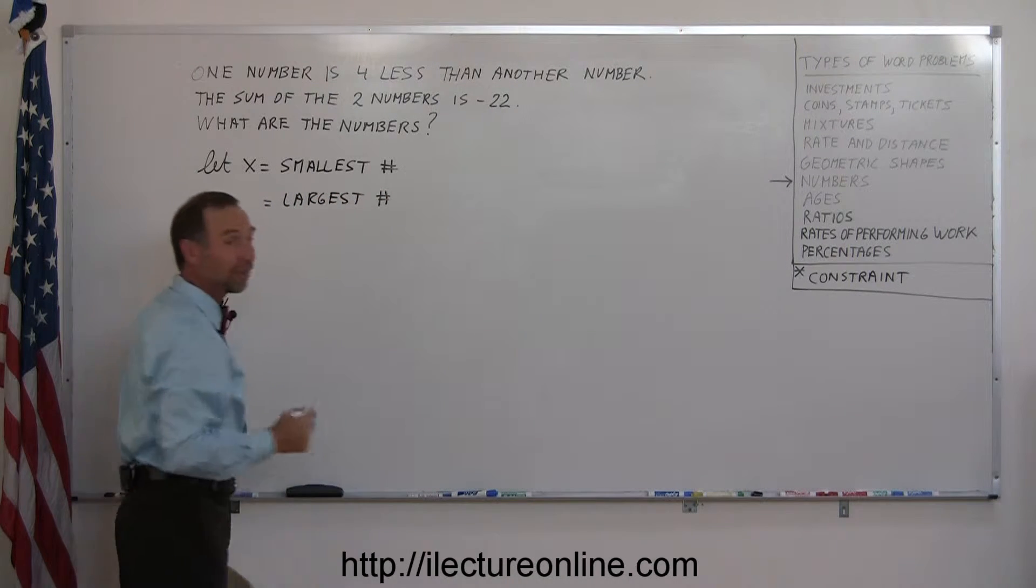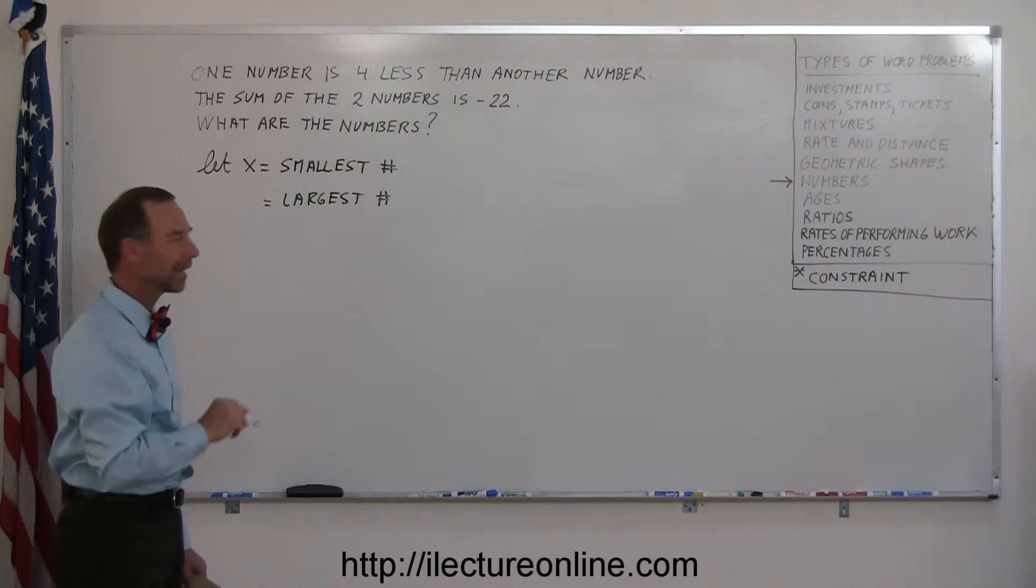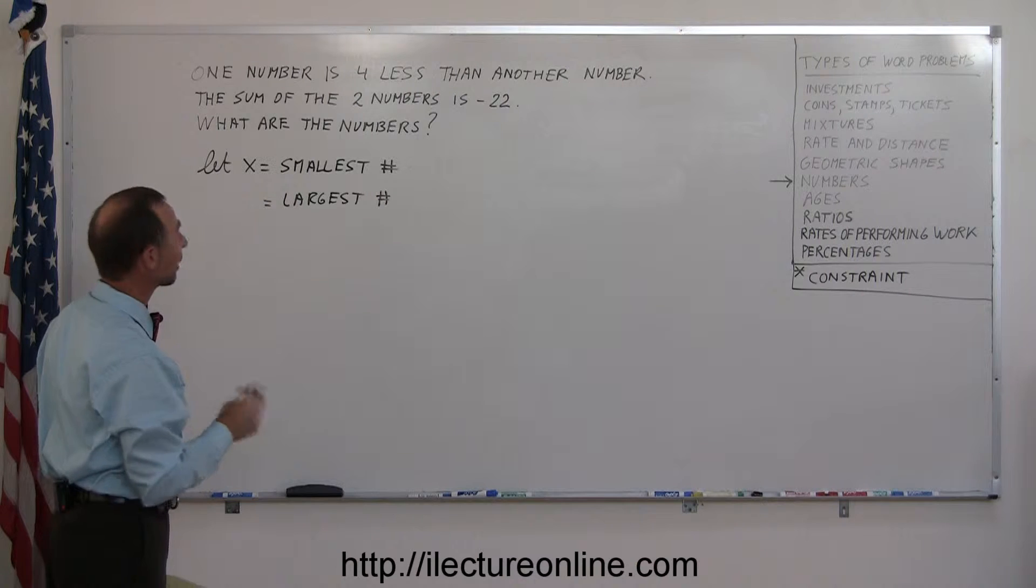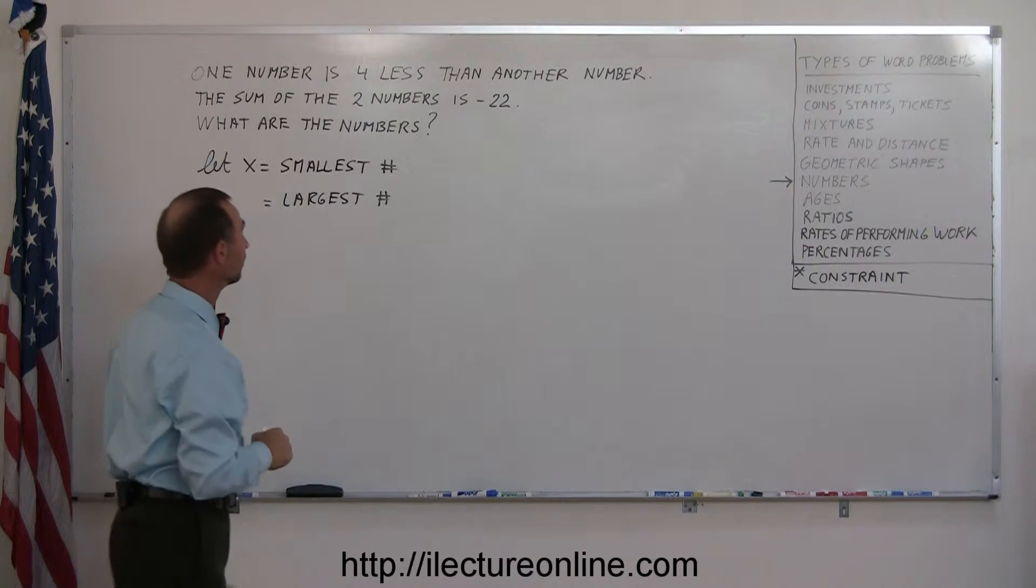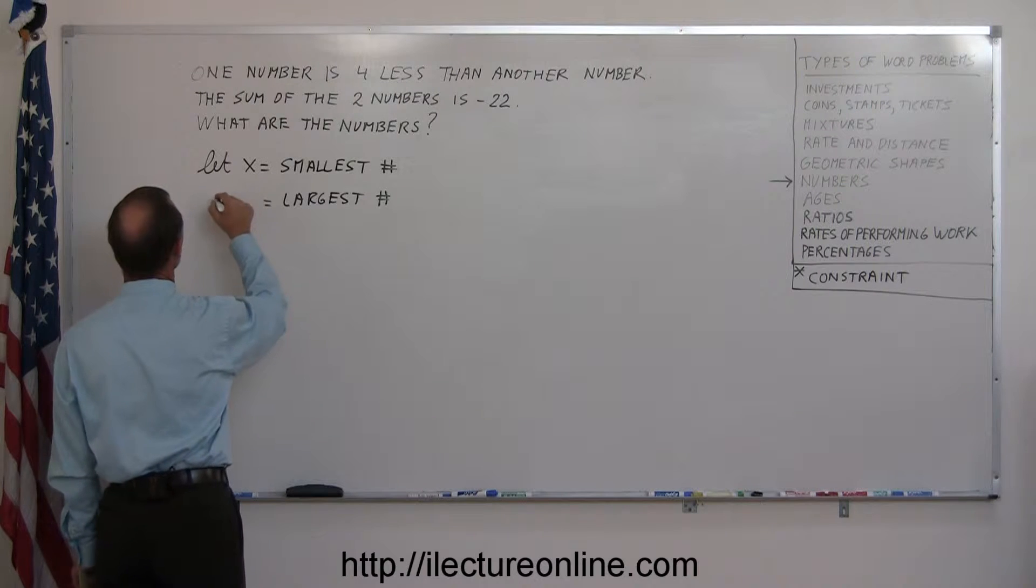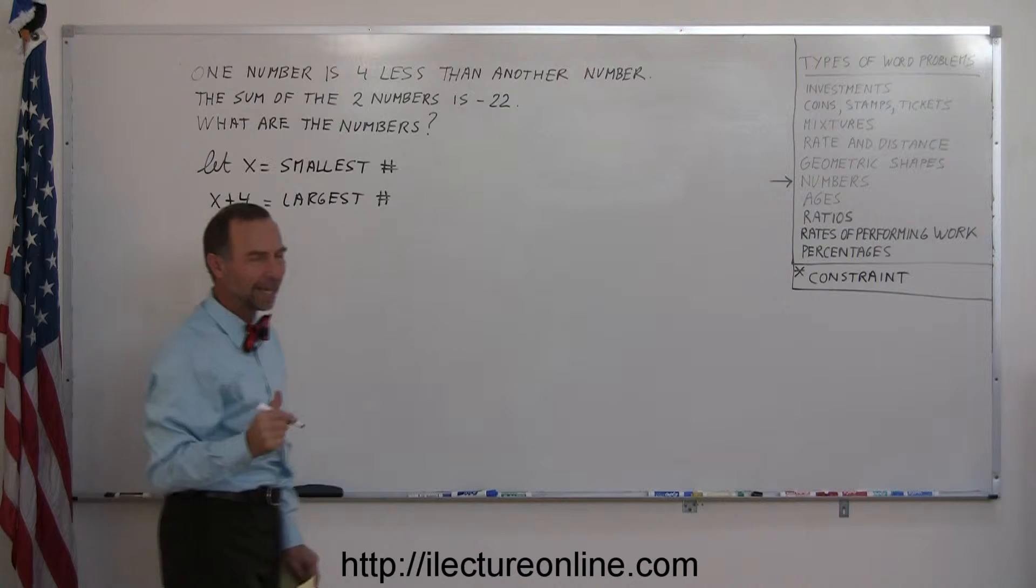Would it be x minus four? Wait a minute. If I subtract four from x, then I get a smaller number, so it can't be that. If one number is four less than another, that means the bigger number must be four more than the smaller number. So x plus four must equal the largest number.